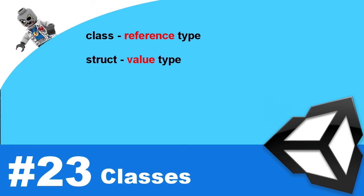To understand what it means to be a reference type and a value type, we have to explore how C# manages its memory. For the most part we don't necessarily have to worry about memory in C# — it's a managed language. But we still have to pay attention to the details, and if you don't, your players are going to notice.